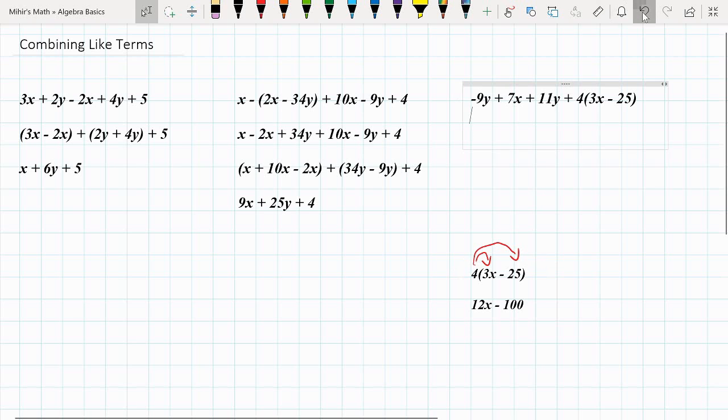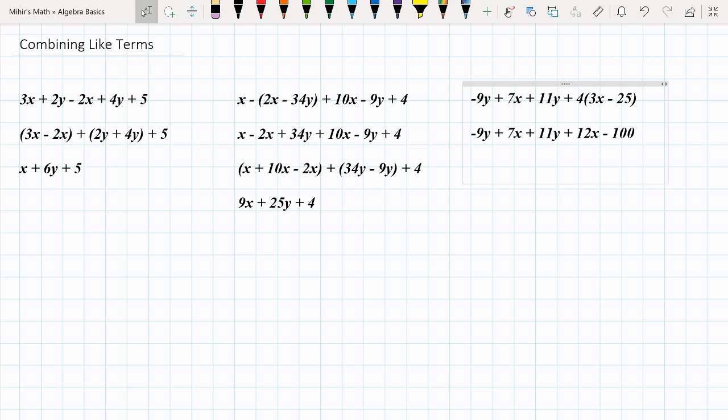So we have minus 9y plus 7x plus 11y plus, here we would write 12x minus 100. As you get better and better at opening parentheses, you don't have to rewrite it and solve it like that. You can just start to see it and you're like, oh, 12x minus 100. But anyway.